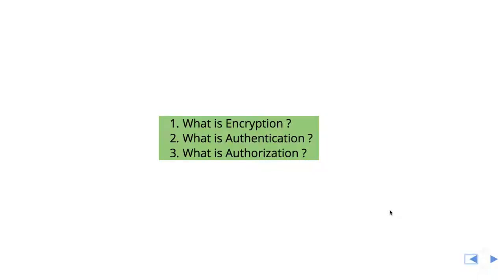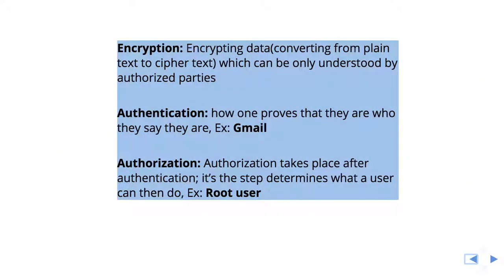Hi everyone. In this lecture we will see what is encryption and what is the difference between authentication and authorization. Encryption is nothing but encrypting the data which can be only understood by authorized parties. Encrypting the data is simply converting the plain text data into cipher text using some encoding.